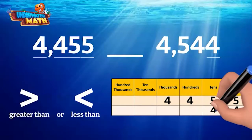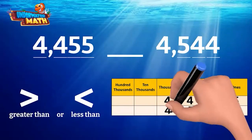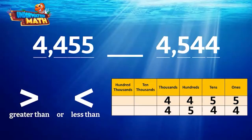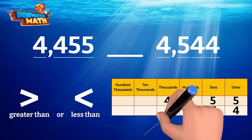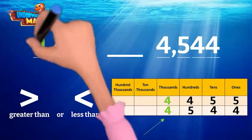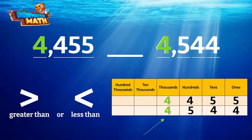We will fill in the next number right below the first number. Now we need to find which is greater. To do this, we always want to compare the digits with the highest value. For our two numbers, the thousands place has the highest value, so we will compare the digits in the thousands place. Both numbers have a four in the thousands place — they have an equal value.